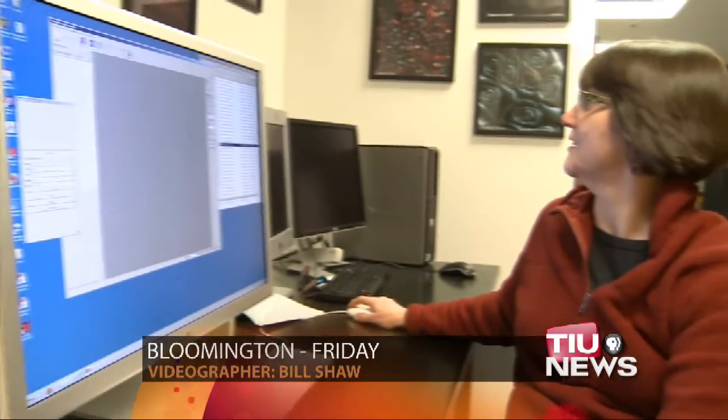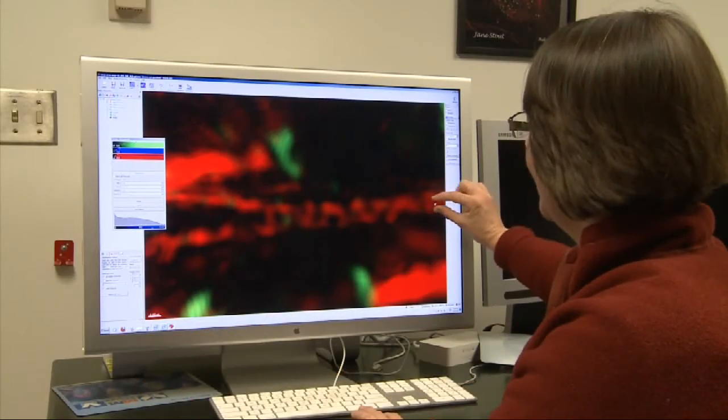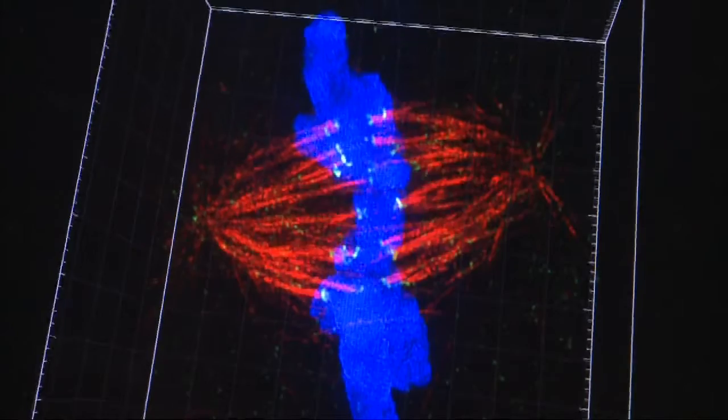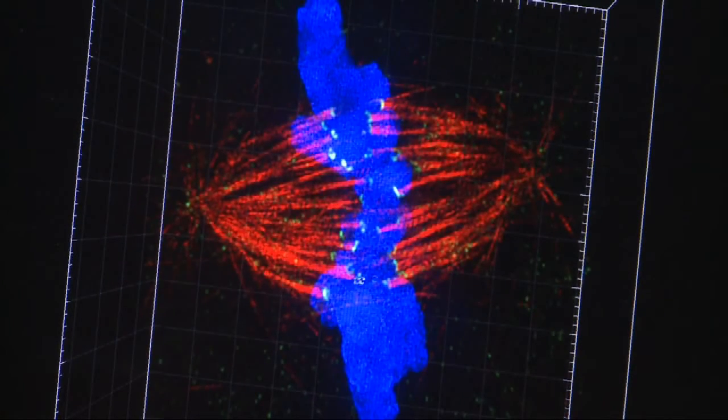IU researcher Jane Stout beat out over 100 researchers in the GE Healthcare Life Sciences 2012 cell imaging competition to have her image broadcast on a big screen in Times Square. The picture is a mitosis, the process of which cells split to produce two new identical cells.